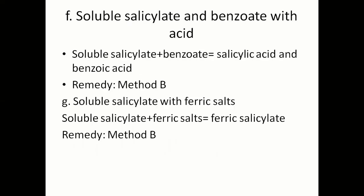Next is soluble salicylate and benzoate with acid. When sodium salicylate plus a benzoate salt is combined in an acidic medium, salicylic acid and benzoic acid are formed. These precipitates are indiffusible, so Method B is adopted. Next is soluble salicylate with ferric salts. When sodium salicylate is combined with a ferric salt, ferric salicylate is formed, and an indiffusible precipitate results — so Method B is used.